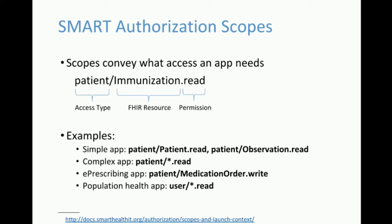An app that displays lab results might want patient demographics — that's 'patient/Patient.read' — and historical observations — 'patient/Observation.read'. If you're doing population health and not limiting to one patient, you'd use 'user/' instead of 'patient/', and 'user/*.read' to read all resources. Apps request those scopes each time they launch to limit the access they're requesting, and the server or user can then approve access for those scopes.